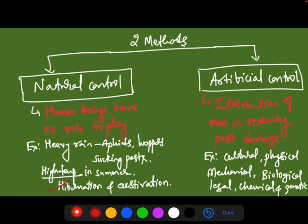We know the concepts called hibernation and estivation. In low temperatures, the insects will undergo a resting period called hibernation. Likewise, in high temperatures, the insects will undergo a resting period called estivation. The increase or decrease in temperature will affect these biological factors, thereby affecting their survival. The next broad method of pest control is artificial control.